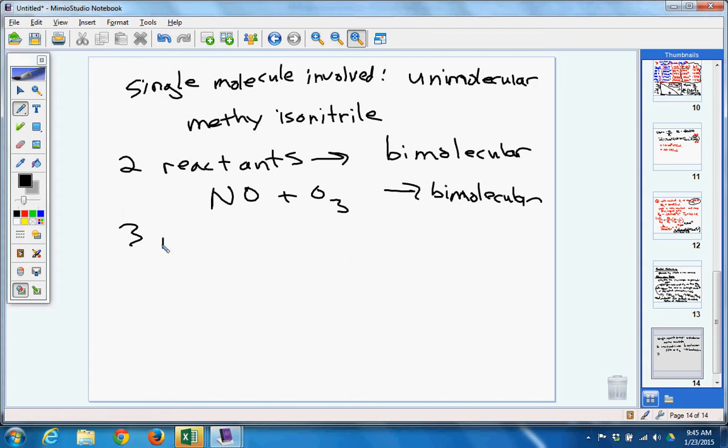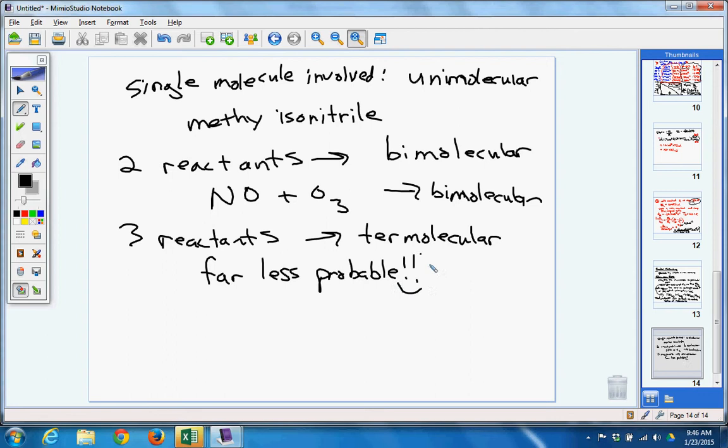Now, if you have three reactants, it is called termolecular. There's never going to be any more. Now, a big note for this. It's far less probable that this will ever happen. Far less probable than the first two. So whenever you talk about termolecular, just understand nine times out of ten, probably not going to happen.